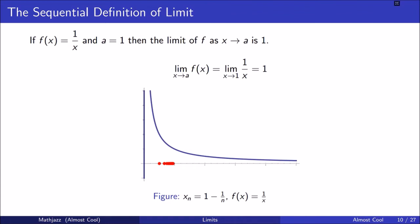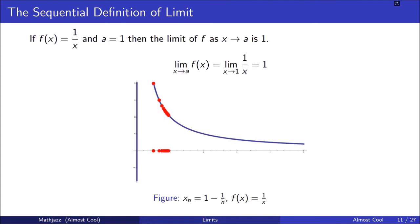That is, x sub n converges to 1, which is a, and f(xn) converges to 1, which is l. So that means the limit as x goes to a of f is l. Here I have taken f of each of these points and drawn them up on the graph, and we notice that the y-coordinates of each of these points go down to 1. That shows an example where, since the limit exists, the sequence in x is taken to a sequence in y that converges to l.